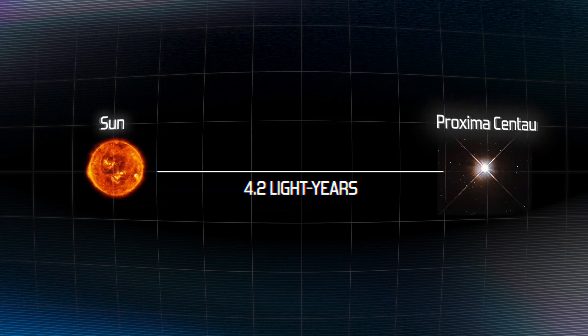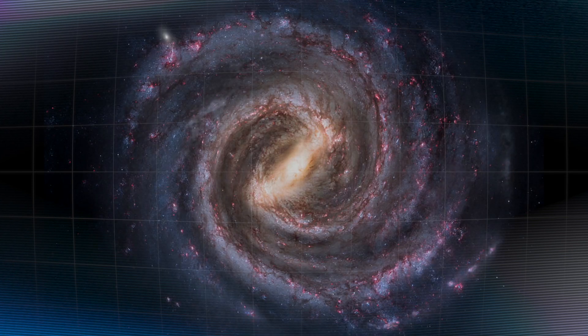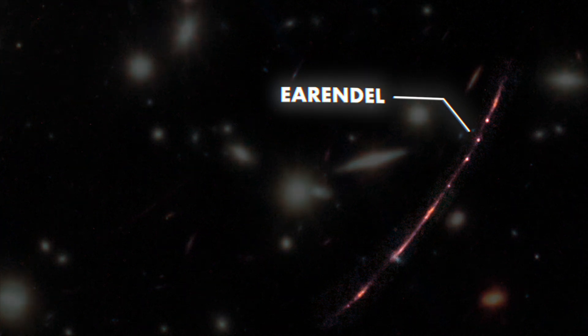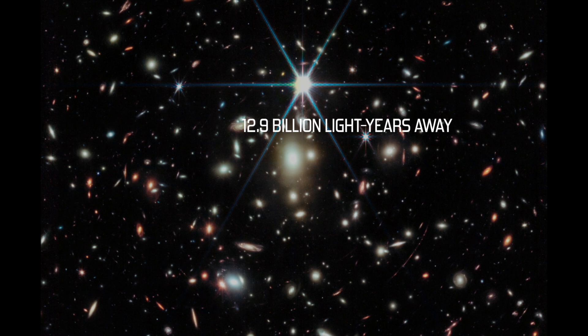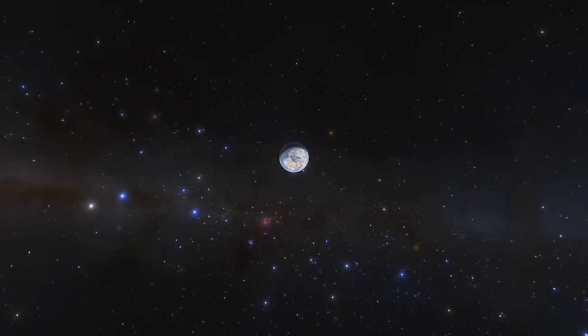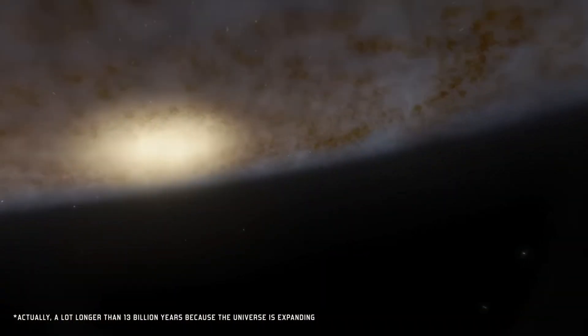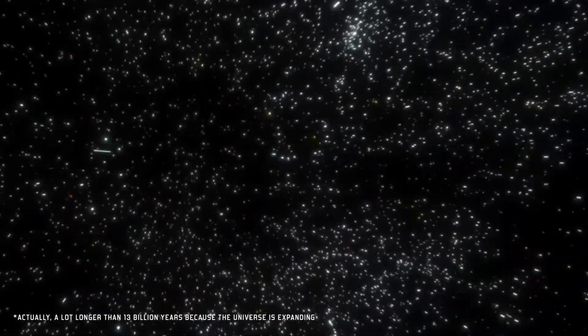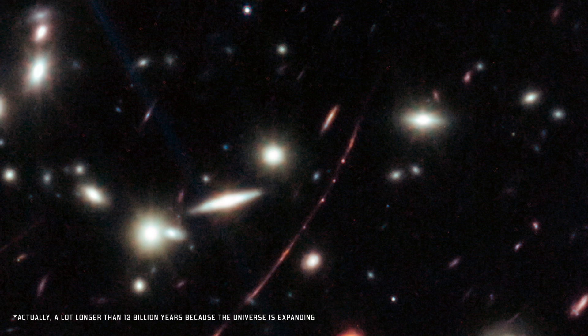The closest star to our sun is four light years away. Our galaxy, the Milky Way, is 100,000 light years across. But this star, Arandil, is 12.9 billion light years away. That means if you traveled at the speed of light, it would take you 13 billion years to get there. It is incomprehensibly far away.